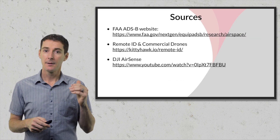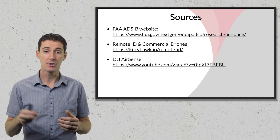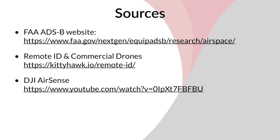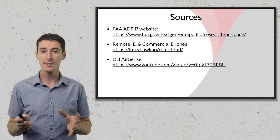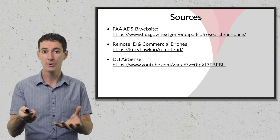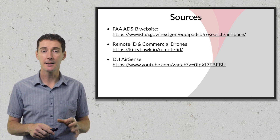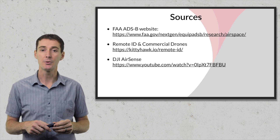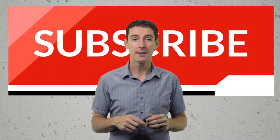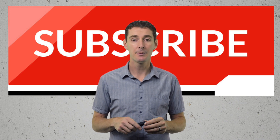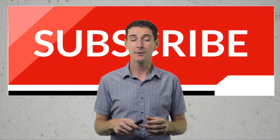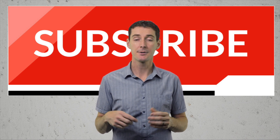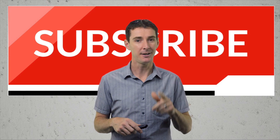Here are the sources I used: the FAA ADSB website has great information including coverage for your area, and the Kitty Hawk website has a 15-page white paper on Remote ID for commercial pilots that I recommend downloading — a lot of the information in this video comes from there. DJI AirSense is the technology from DJI that uses ADSB, and you can see that video on YouTube. If you have questions, leave them in the comments, and please subscribe to the channel for more videos on drone technology, Part 107, and hobbyist flying.